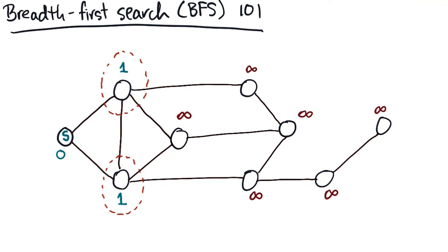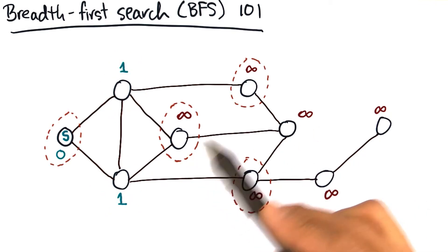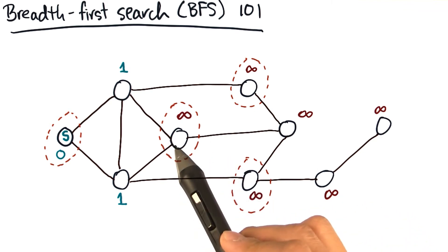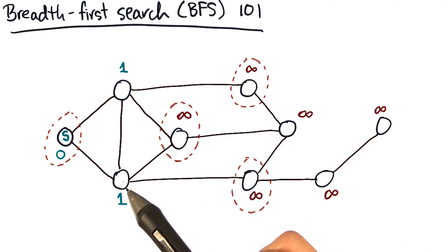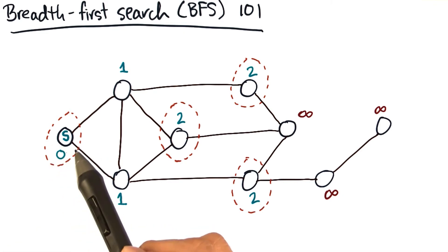Now let's visit the neighbor's neighbors. Now, most of these are not yet visited, so they must be one more away from the previous nodes we visited. But one of these we've seen already, so that means we already know its shortest distance, and so we can leave that one alone.